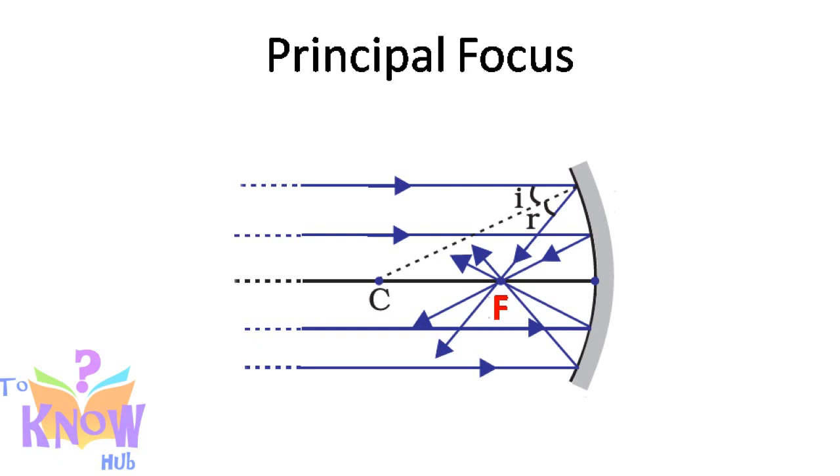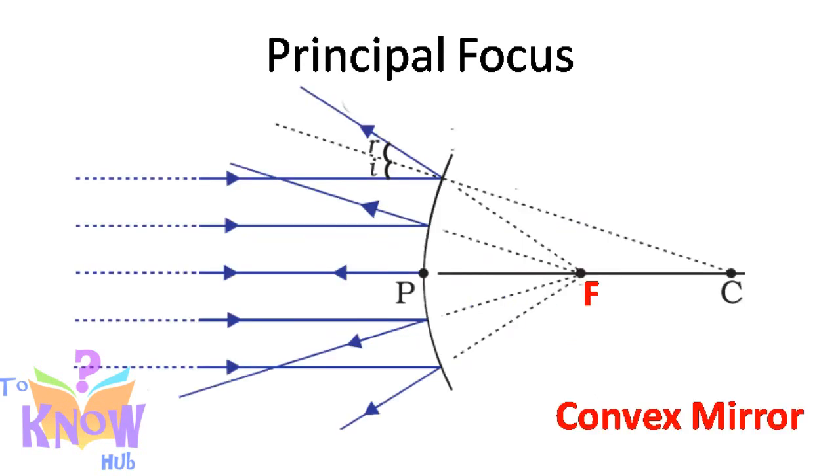Let's see how rays parallel to principal axis, when fall on a concave mirror, they converge at a point. Means rays meet at a point on principal axis. That point is the principal focus of that concave mirror.